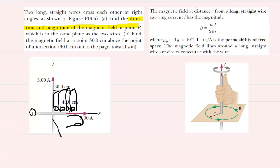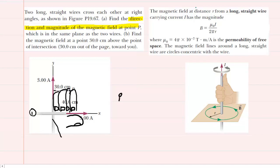This is an attempt at drawing a right hand, and notice the thumb is pointing to the right in the direction of the current. We can see that our four fingers, as we grasp the wire, would be curling out of the computer screen. So the magnetic field will also be pointing out of the computer screen, because your fingers point in the direction of the field. The fingers curl outward, therefore the magnetic field will be pointing outward. Let's make a note that B1 will be out of the page.